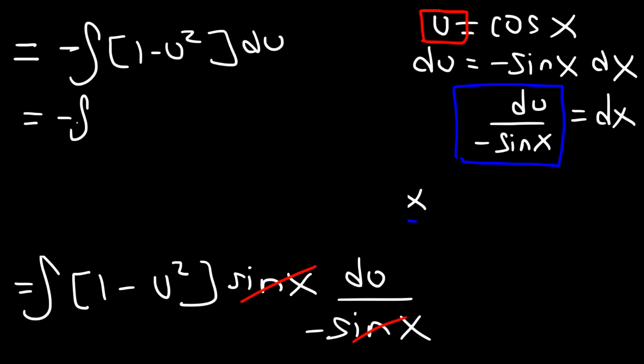The anti-derivative of 1 is going to be equal to u. And the anti-derivative of u squared is u to the third over 3 plus some constant c.